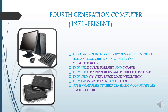The computers developed since 1971 up to the present are called the fourth generation computers. The fourth generation computer uses a microprocessor. A microprocessor consists of a small silicon chip on which thousands of circuits are placed. The fourth generation computers are smaller, portable, and cheaper. They use less electricity and produce less heat.